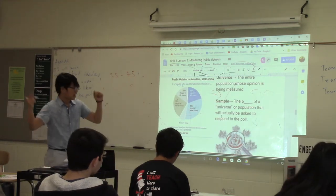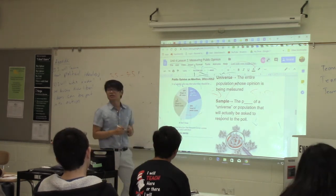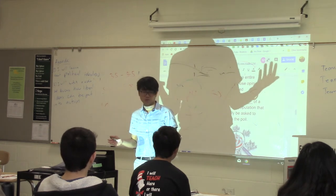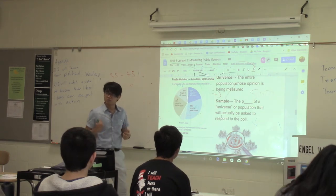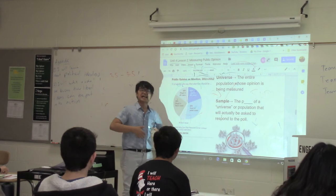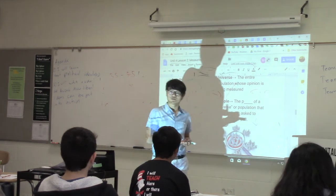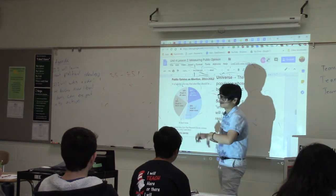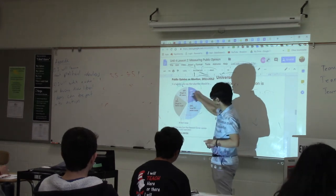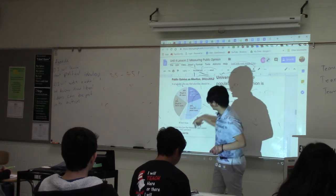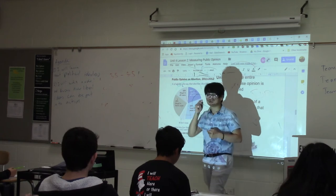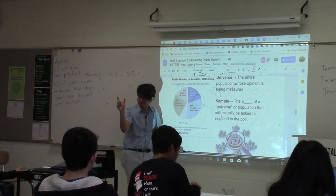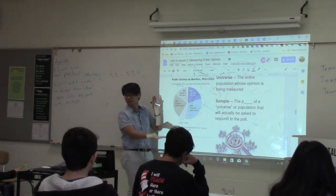A couple of vocabulary words. The population you're trying to measure is called the universe. For example, if I want to know what women in the United States think about abortion, my universe is all women in the United States — all 350 million of them. But it's impossible to ask all of them — it would cost too much money and take too much time. So instead I need a sample: a portion of the population that is actually asked the question. The entire population is the universe; the portion actually asked is the sample. If done correctly, the results are pretty close to the actual beliefs of the population.